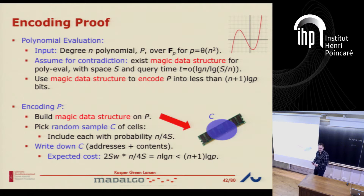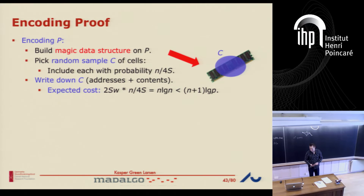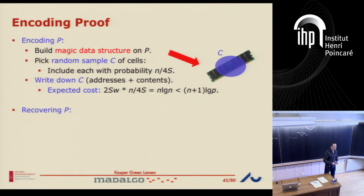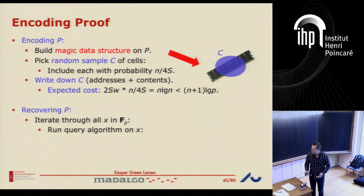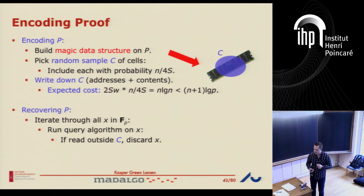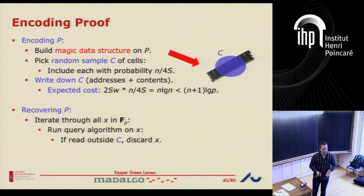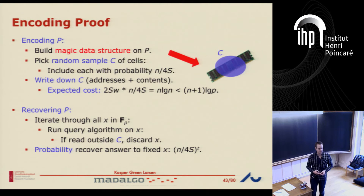Now I just want to show that I can get the polynomial back from this encoding. It's a really simple encoding — just pick some random cells and write them down. The way you recover your polynomial from this set of cells is simple: you take every possible query. There are p different queries you could ask for this data structure problem, and for each of them you start running the query algorithm on this input. The query algorithm repeatedly requests a cell, and if the cell is not in the sample I wrote down, I just discard the query and move on to the next one. If all of them are there, I'll get the answer back — I can run the entire query algorithm.